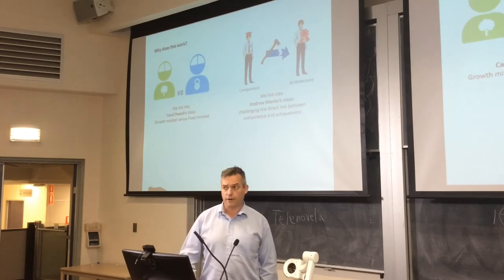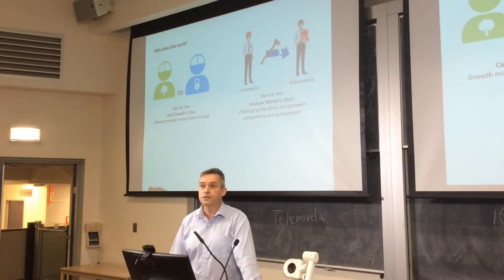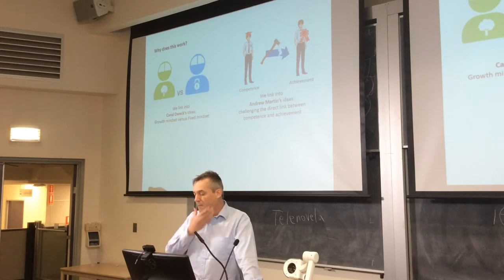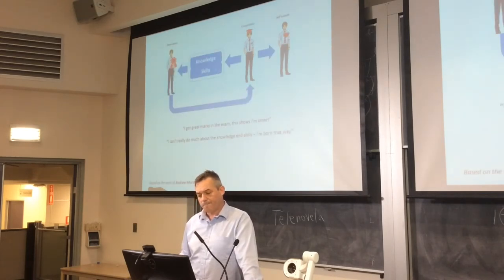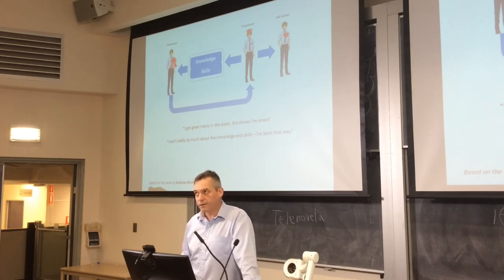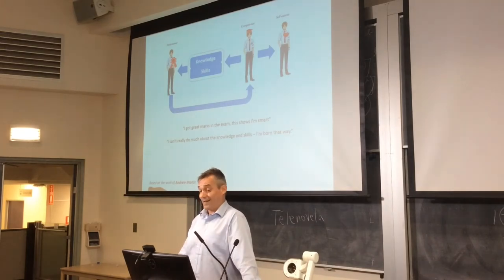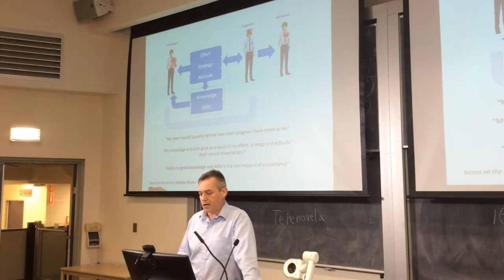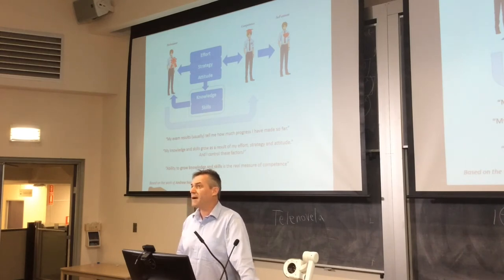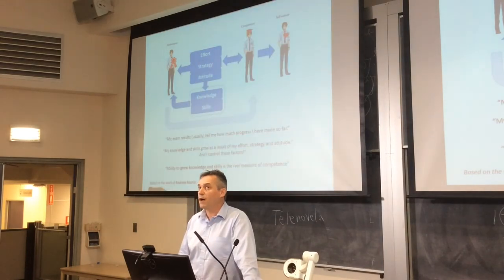So why does this work? I think it works because it ties into Carol Dweck's ideas on growth mindset and fixed mindset, and Andrew Martin's model of the link that students make between what they are and how they achieve. So here is a very simple model of what I think goes on in most students' minds: I got great marks in the exam, therefore I am smart. Whereas what we really want to get to is this type of approach: my exam results don't tell me how smart I am, they actually tell me how well I'm working.